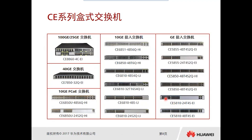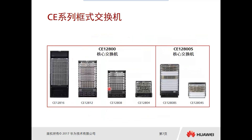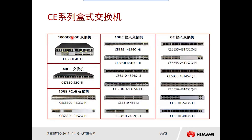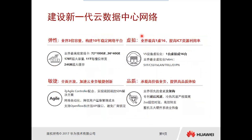Now let's look at the box-type CE switches. There are four categories: CE5800, CE6800, CE7800, and CE8800. These switches are typically placed at the access layer to connect to physical servers and storage devices, forming the backbone of our main network. In our DCN fabric network, we use a spine-leaf architecture — spine refers to the rack-mounted chassis switch, and leaf generally refers to our CE box switch.